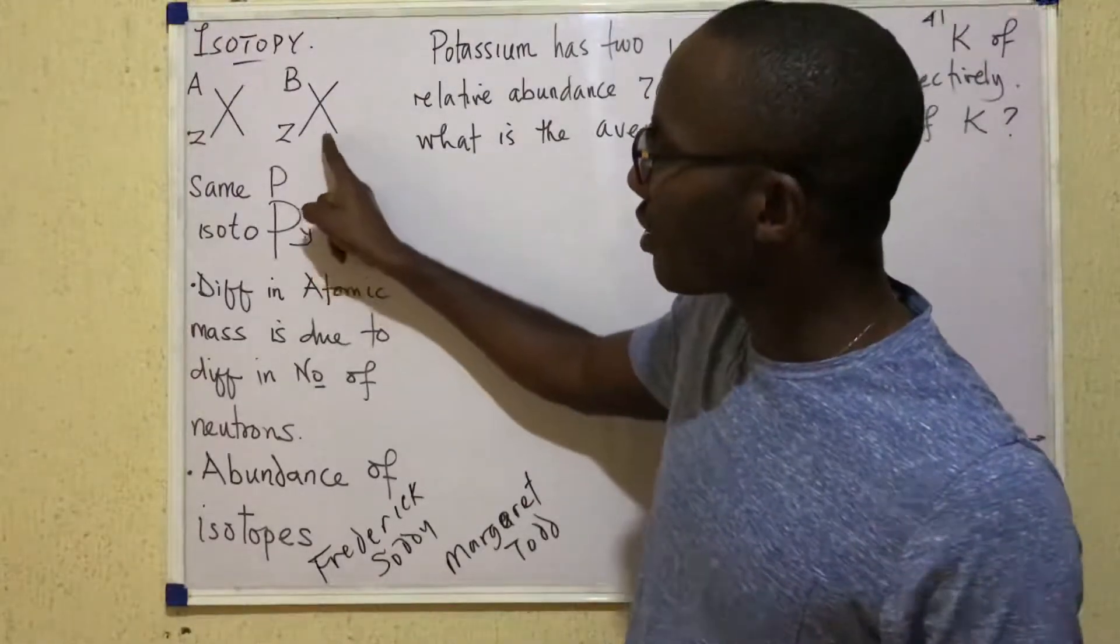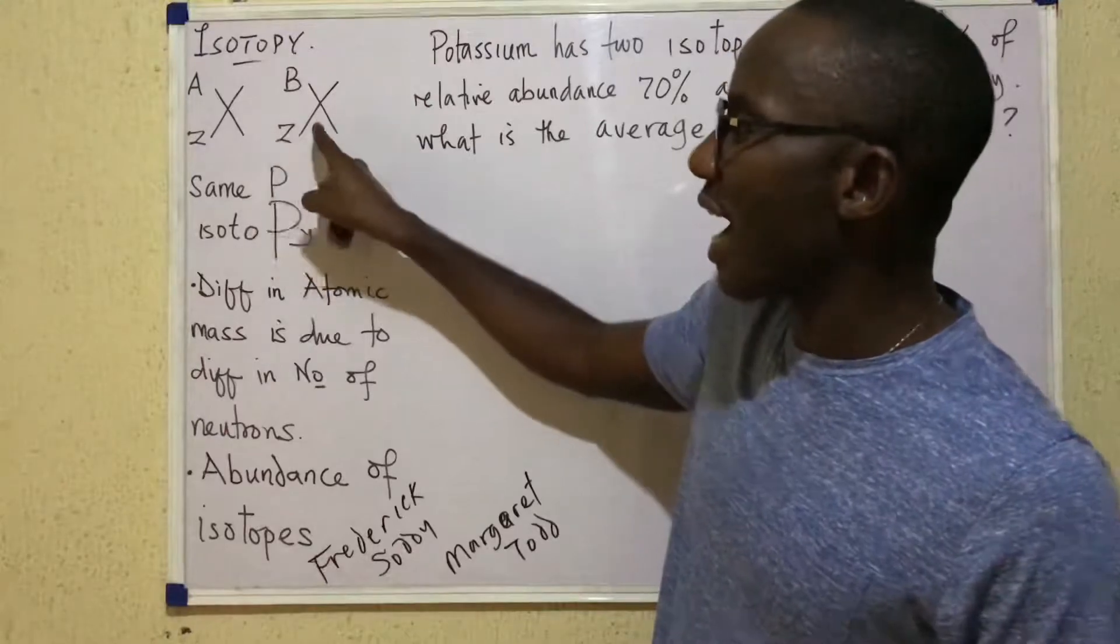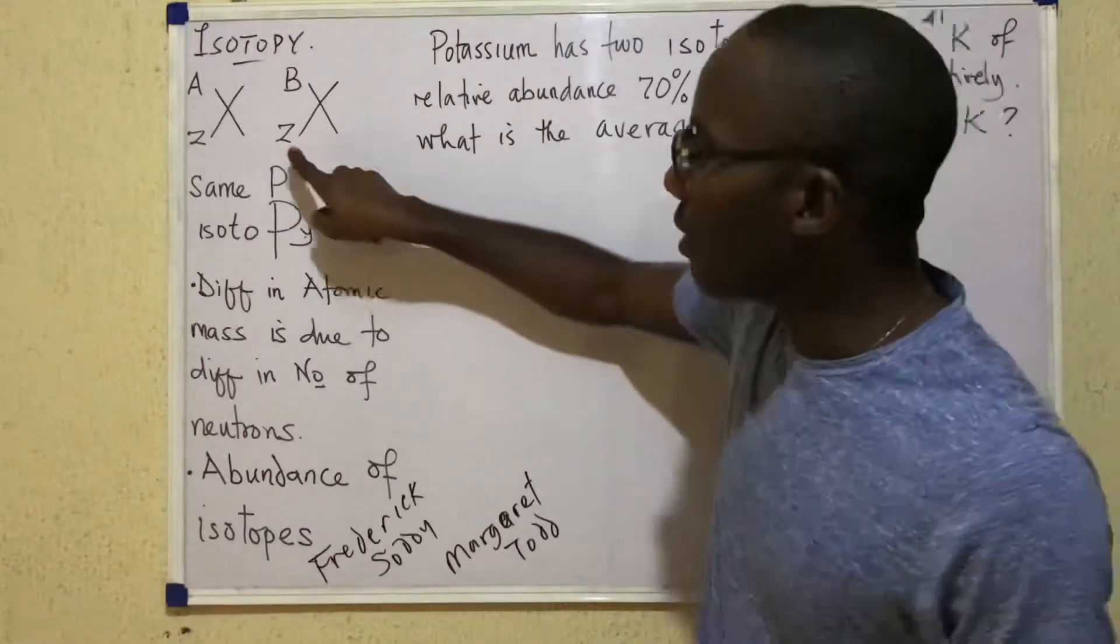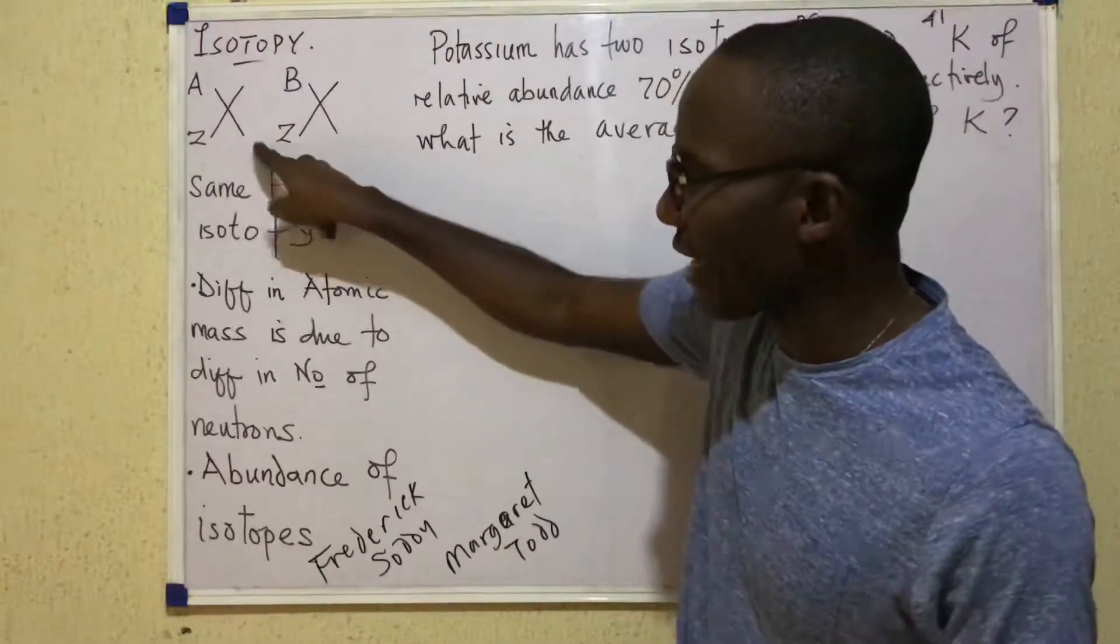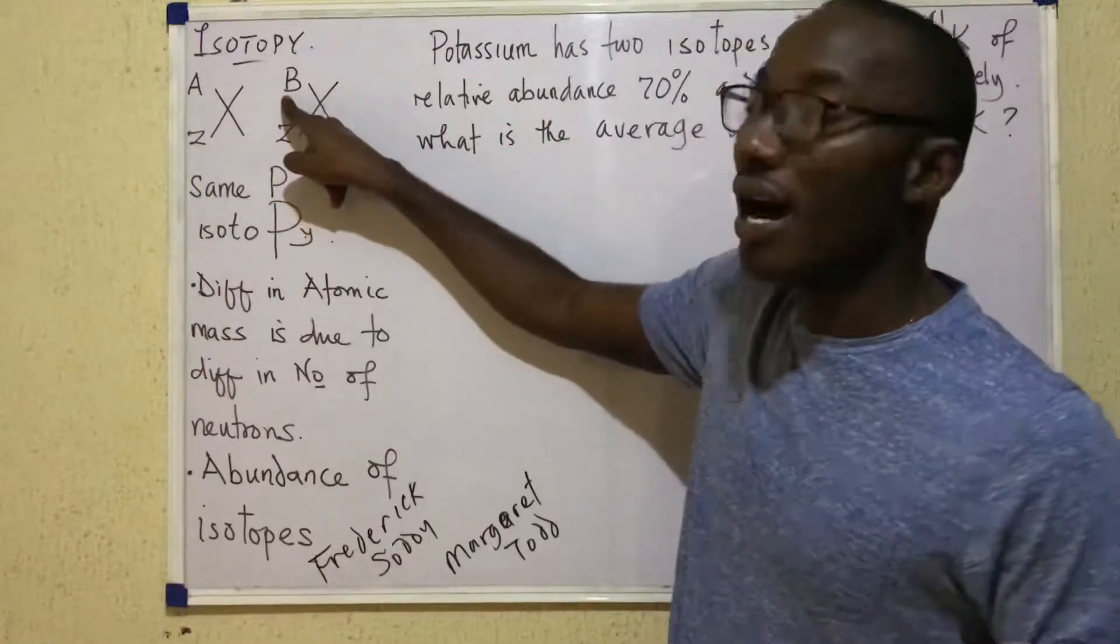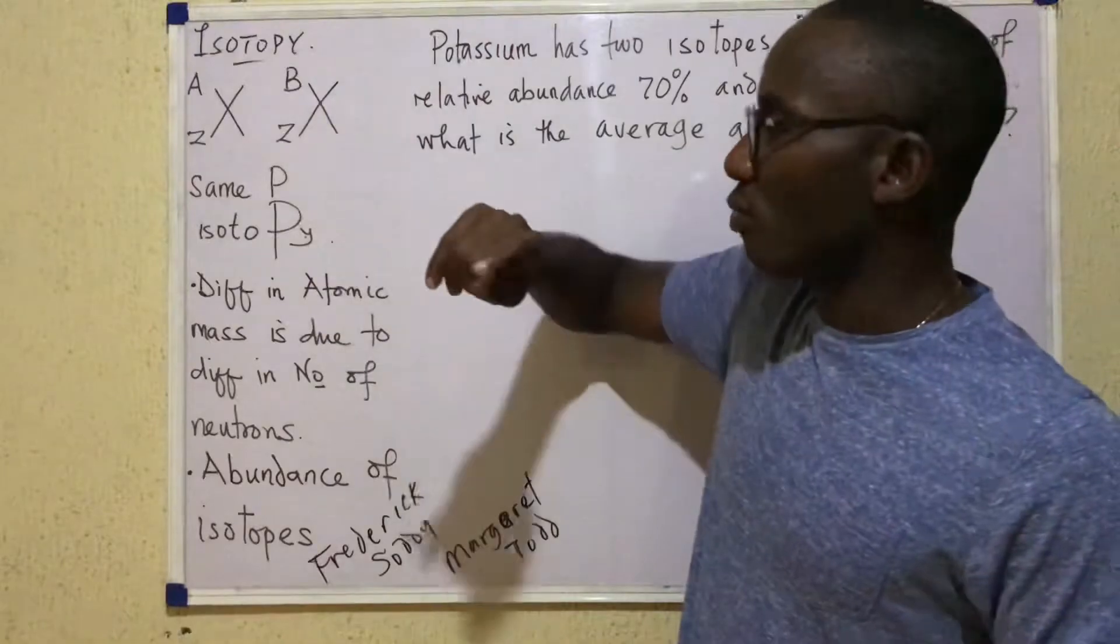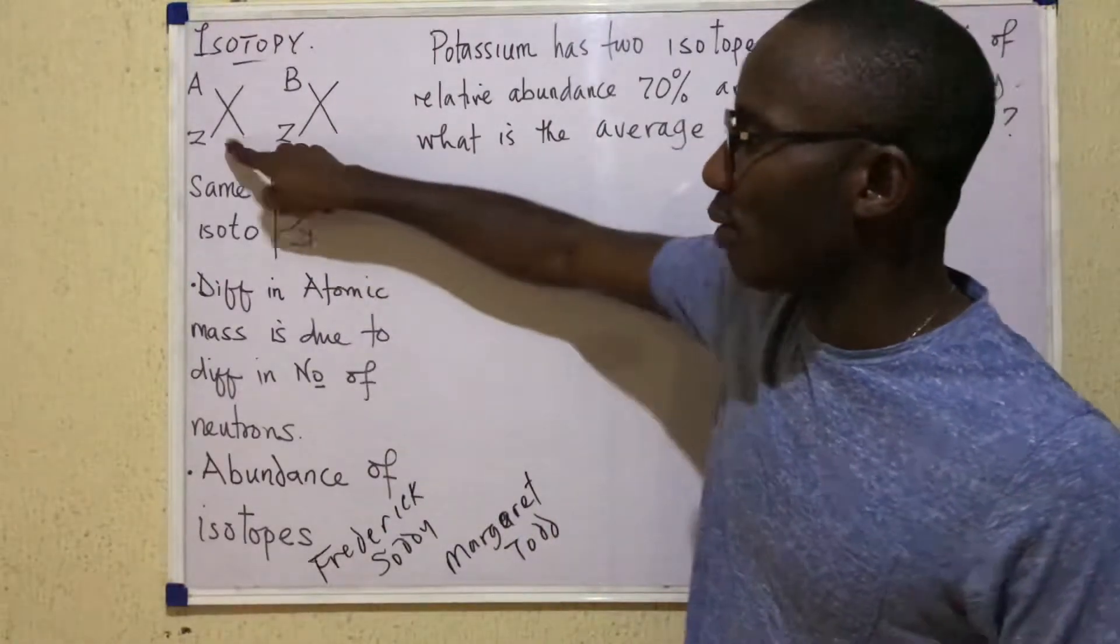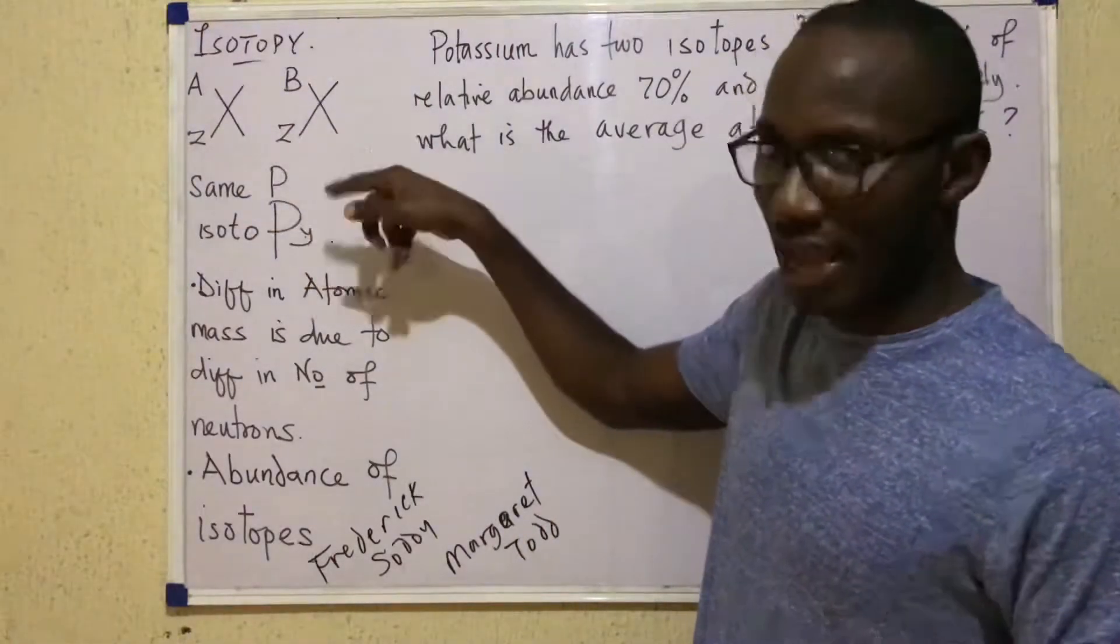So as it stands, looking at these two atoms, we say that they are isotopes. Why? Because their numbers down here are the same but their masses up there are different. By the way, observe that their symbols are the same, X and X.